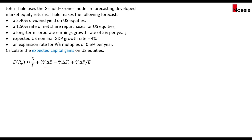For expected capital gains on U.S. equities, we take the percentage change in corporate earnings and add the percentage change in the PE multiple. So that will be 5% plus 0.6%, giving us 5.6%.